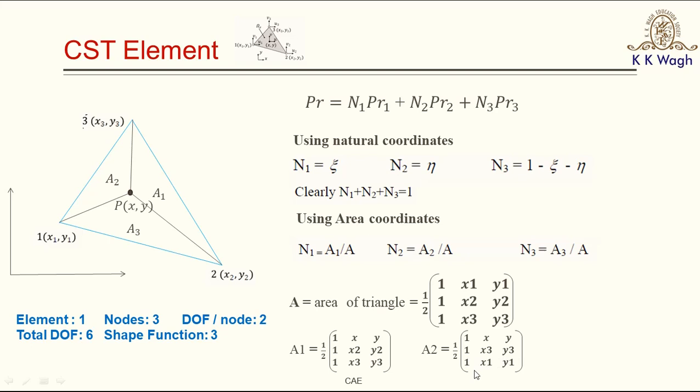For area a2, considering point P first then going anticlockwise, we get a2 = (1/2) × determinant of [1, x, y; 1, x3, y3; 1, x1, y1]. And for area a3, considering point P first then anticlockwise nodes 1 and 2: a3 = (1/2) × determinant of [1, x, y; 1, x1, y1; 1, x2, y2]. Using these two methods you can find any properties — stress, strain, temperature, or coordinates — within the element very easily.